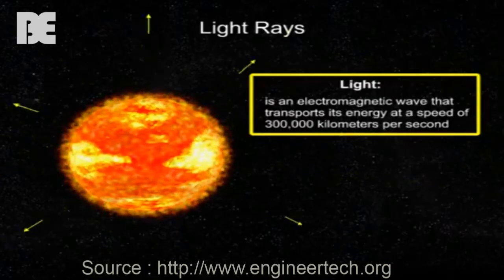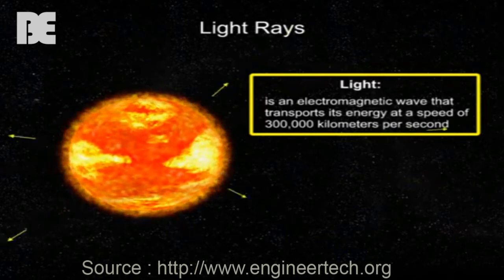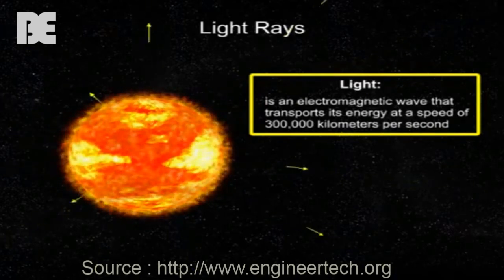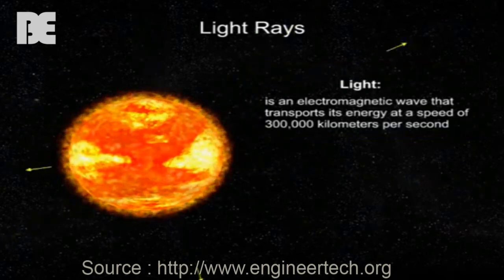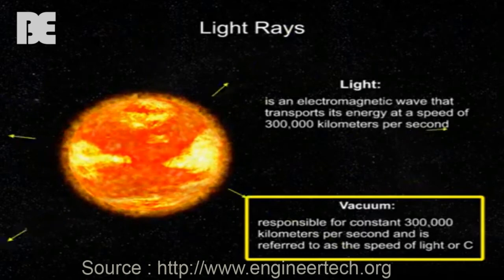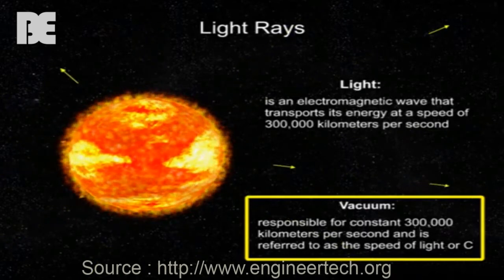Light is an electromagnetic wave that transports its energy at a speed of 300,000 kilometers per second. This constant speed is how fast light travels in a vacuum and is referred to as the speed of light, or C.